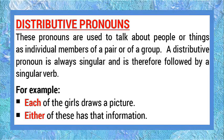Distributive pronouns. These pronouns are used to talk about people or things as individual members of a pair or of a group. A distributive pronoun is always singular and is therefore followed by a singular verb. For example: 'Each of the girls draws a picture.' 'Either of these has that information.'